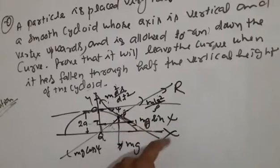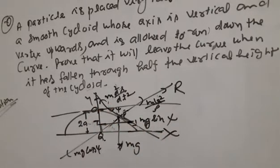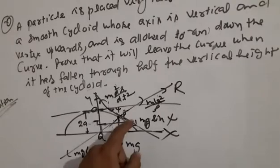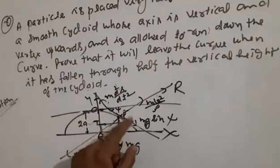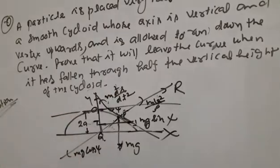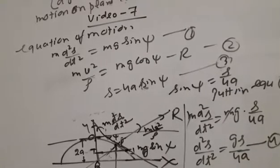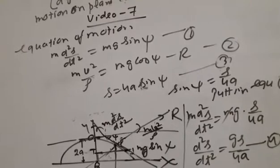This angle is the angle of inclination of the tangent at point P. We will find the vertical height and get the equation of motion: m·d²s/dt² = mg·sinψ (equation number 1), and for the normal reaction: mv²/ρ = mg·cosψ − R (equation number 2).